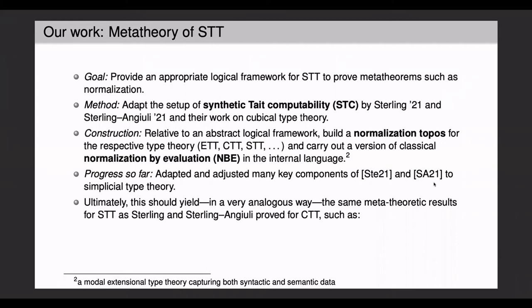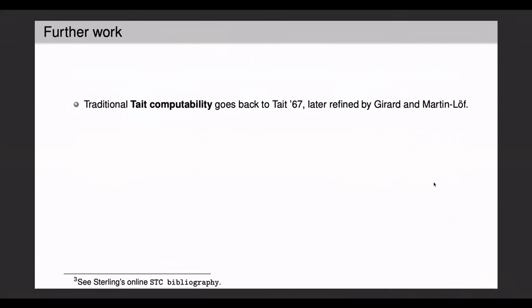Ultimately, we think that this should yield in a very analogous way the same metatheoretic results, namely normalization, idempotence of normalization, and decidability of judgmental equality. Overall, this method goes back to the classical version of Tate computability, due to William Tait in 1967, later refined by Girard and Martin-Löf.